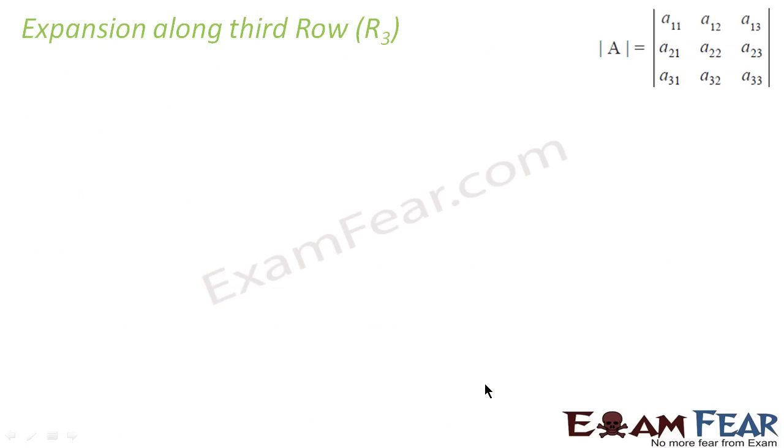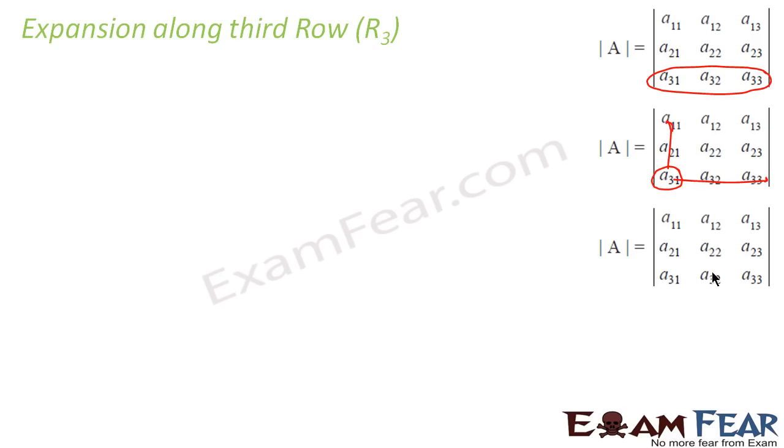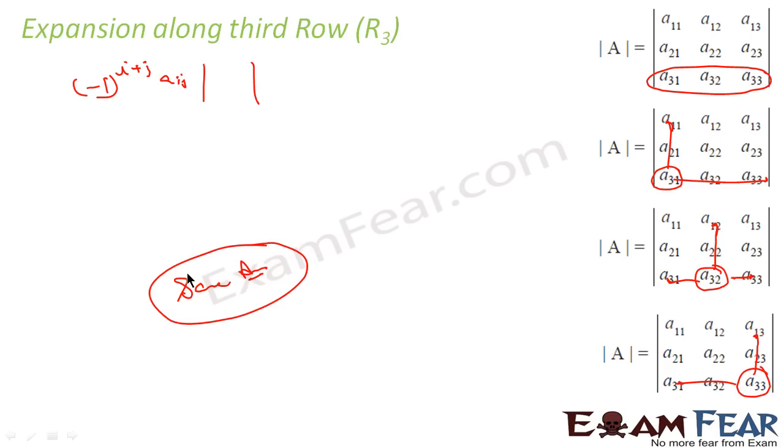Similarly we can do for row 3. So for row 3, what we can do? We select this row 3 and then we select these elements. First element we selected, we got these guys removed. Second element we selected, we got these guys removed. And third element we selected, we got this guy removed. So I got 2 by 2 determinants. I can use the same formula: minus 1 to the power i plus j, aij, and the determinant. I get 3 determinants, add them all, and you see that you'll get same answer here also. I'll not solve this for you. You can solve this. You'll get same answer. So you can see that for all rows 1, 2, or 3, you get same determinant.